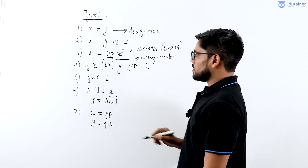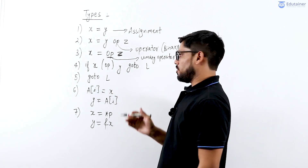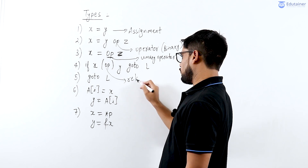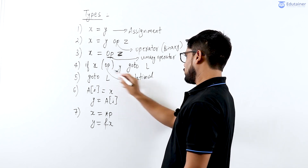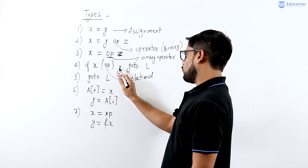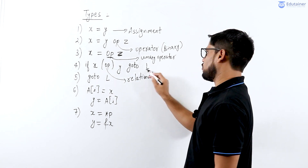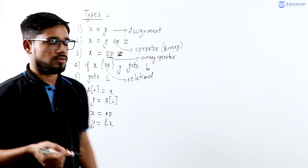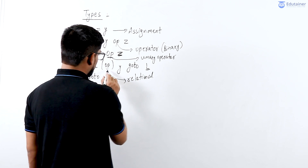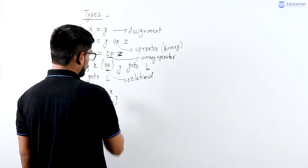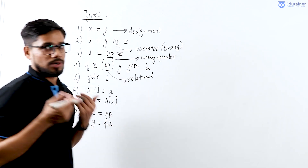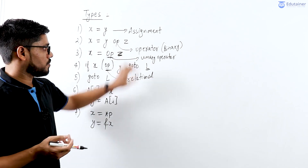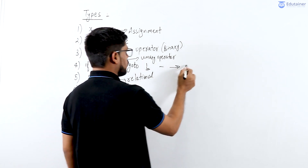The fourth operation is the conditional operation: if x relational_operator y, then go to some line of code — where L represents a line of code. This operation executes only based on the condition. If the condition evaluates to true, then control moves to line L. So it is a conditional goto.